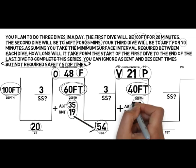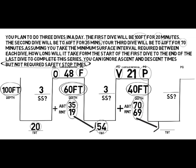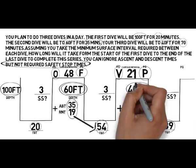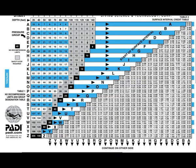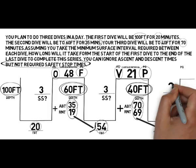With the 21 minutes entered, we total up the actual bottom time and residual nitrogen time to find the total bottom time of the third dive: 139 minutes. Using 139 minutes of total bottom time at 40 feet, we scroll down to find whether our total bottom time falls within one of the gray boxes that denotes a required safety stop — it certainly does. A safety stop is indeed required on the third dive as well. We now have all the information we need from the table.